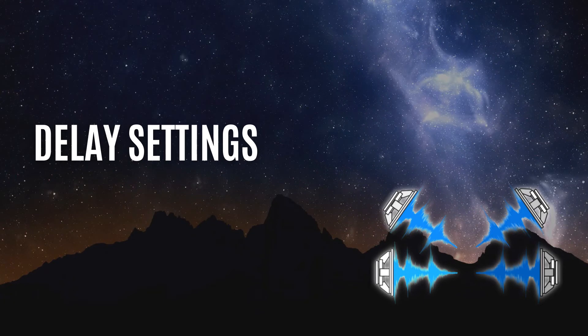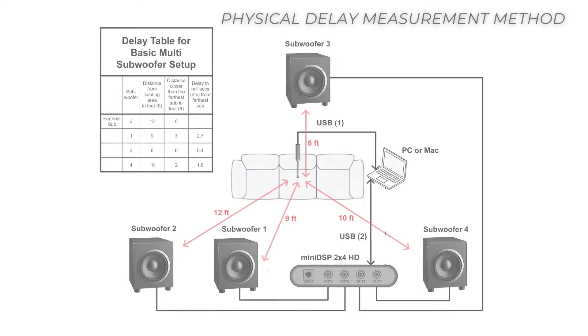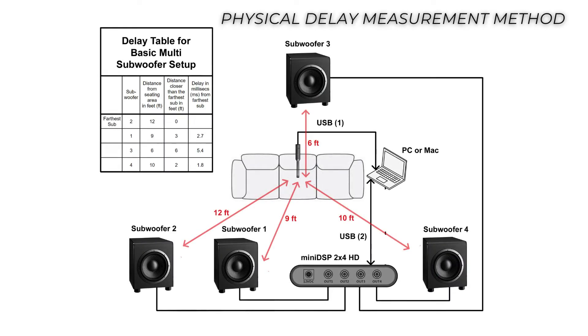We present two approaches to time aligning all of the subwoofers within the group. The first and simplest approach uses physical distance measurements. This requires that all the subwoofers be of the same design. In this video, we'll focus on this method. Using physical measurements for determining the delay offsets from the various subwoofers to the listening position assumes the subwoofers are the same design and have equivalent near-field latency and phase. Otherwise, delay can be set electronically with REW. From the plug-in output page, enter the individual subwoofer delay settings as follows.